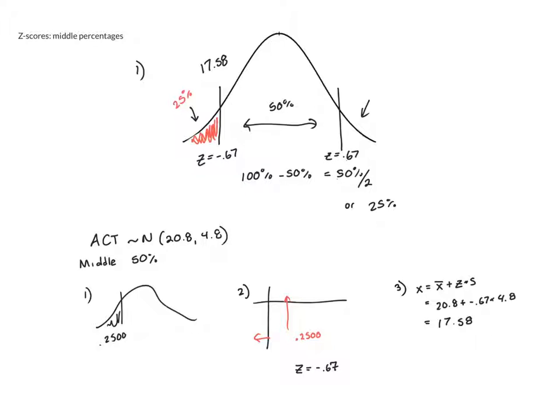So to find the upper end, all I'm going to do is repeat the process. x = x̄ + z × s, which will be 20.8 + 0.67 × 4.8, or 24.02.